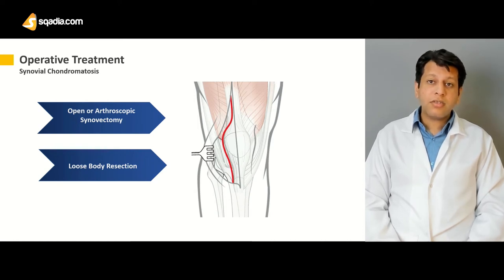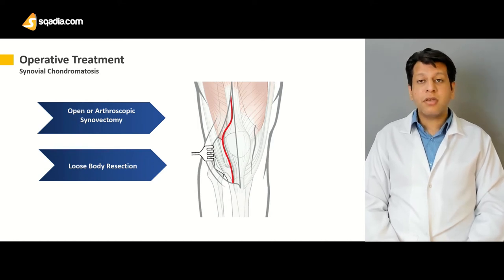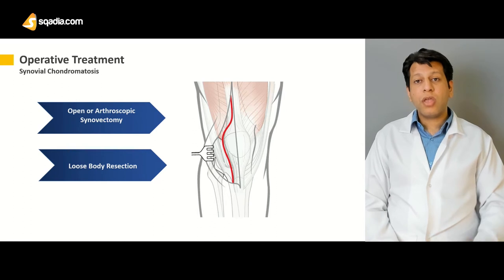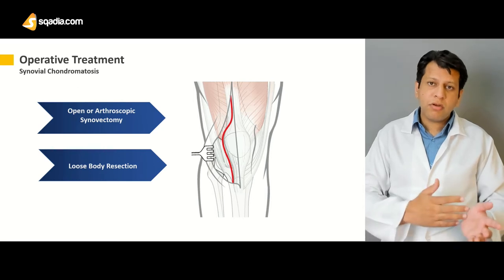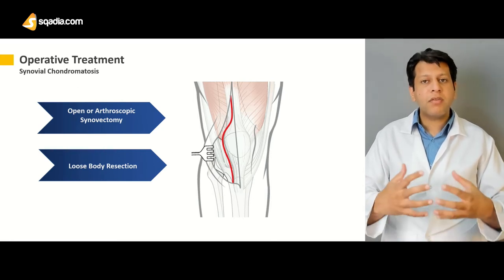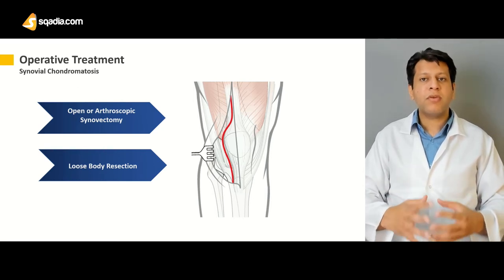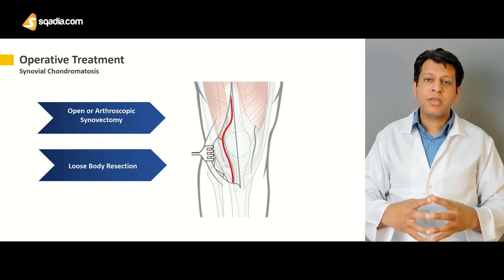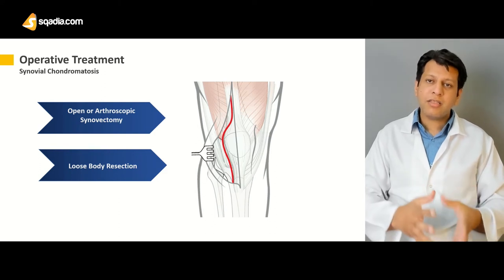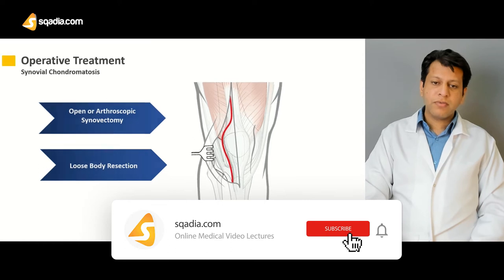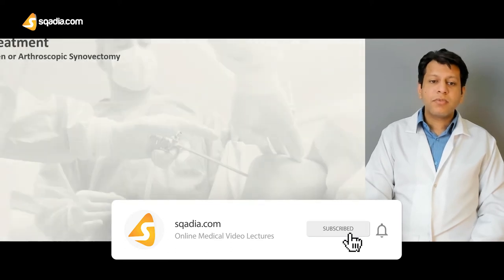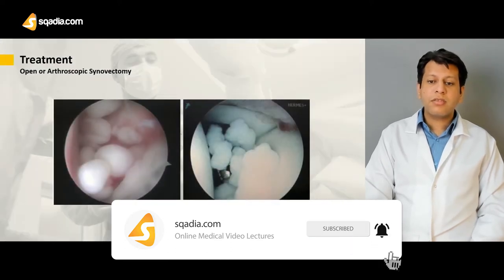Synovectomy is important because the underlying problem is synovial proliferation and cartilage metaplasia, and there is every chance that this may recur. Therefore, if you only remove the loose bodies, over the period of a few years the patient may come again with the same problem, and the underlying issue may again be synovial chondromatosis.